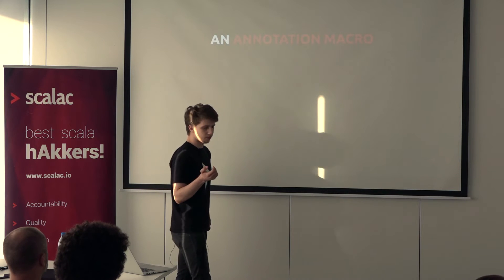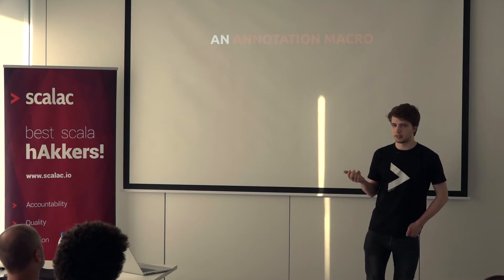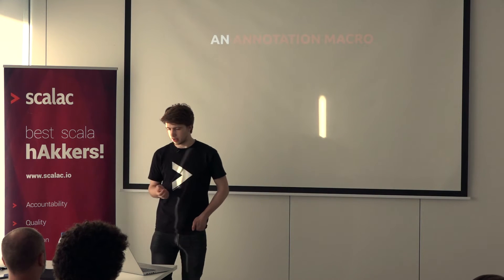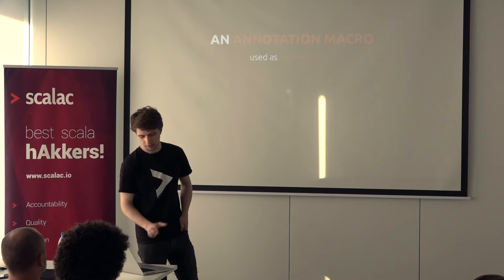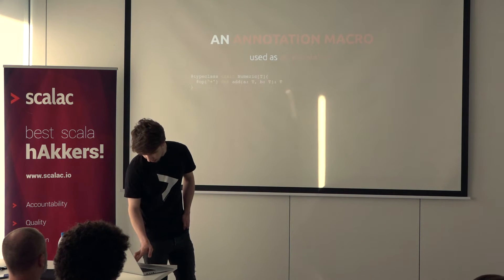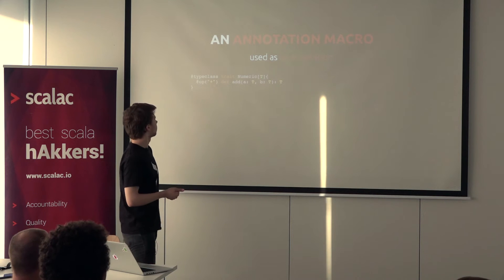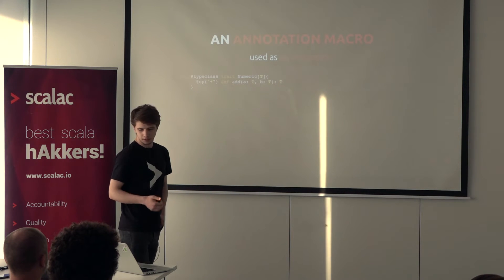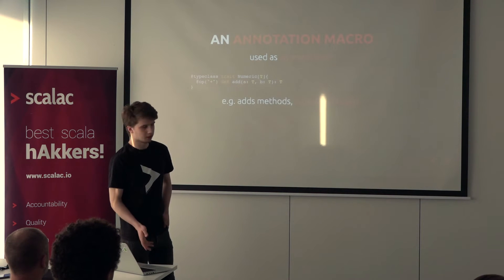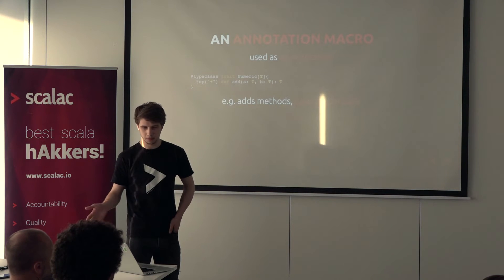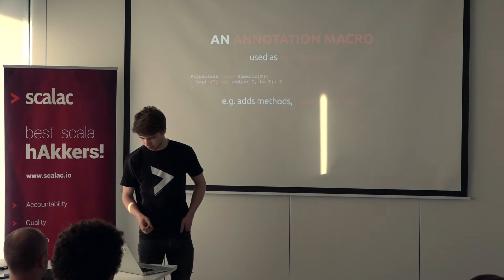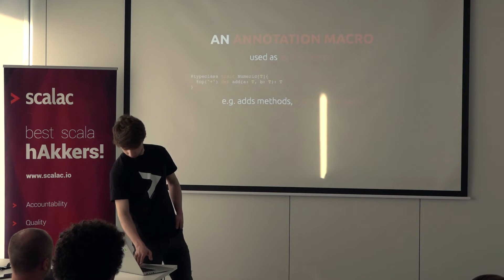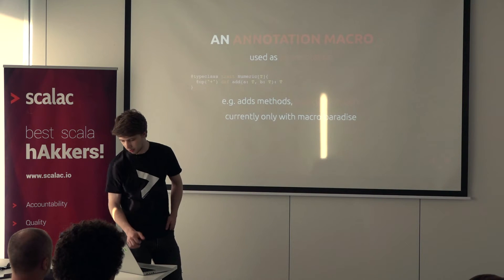There are a few kinds of macros possible in Scala and other languages. We're going to talk about two today because they're the most commonly used ones. The first one is an annotation macro — and surprise, it's used like an annotation. It basically looks like a normal annotation you would add to your code, to your trait or method. It can do very many things: add methods to your class or traits, add some helpers, some implicits. Currently, if you want to use macro annotations, you need a compiler plugin called Macro Paradise.